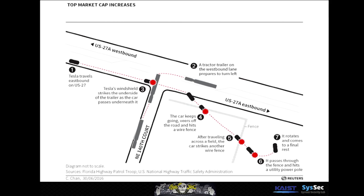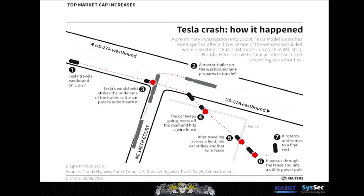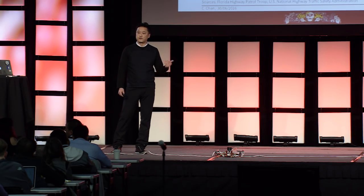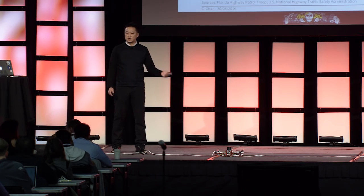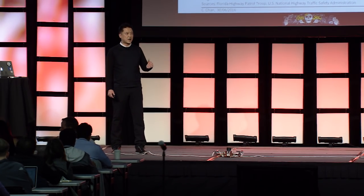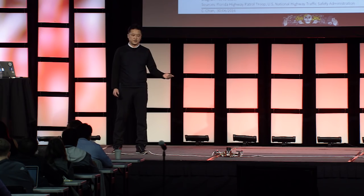This is the Tesla incident that happened on May 7th, 2016. Tesla claimed that the camera sensors failed to recognize the side of a huge trailer. What happens if a malicious adversary can cause this kind of failure intentionally? In the rest of this talk, I'm going to discuss how a malicious adversary can fail those sensors intentionally.